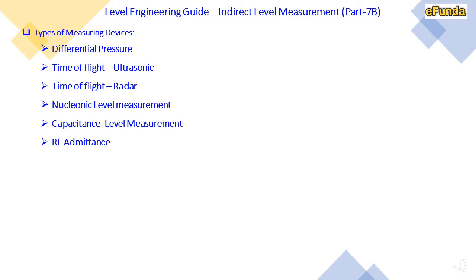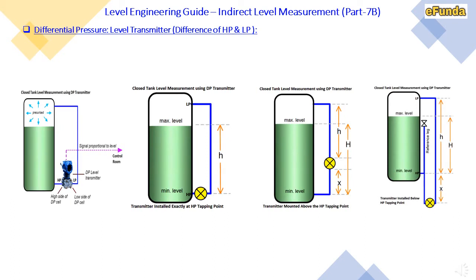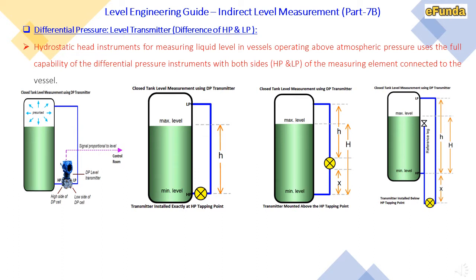We will see the key and most popular application devices used in industry. Our first type is the differential pressure (DP) level transmitter, which measures the difference between HP (high pressure) and LP (low pressure). The differential pressure acts between the two pressures appearing at the HP side and LP side. This technique is used to measure the exact level of liquid inside a vessel — a hydrostatic head instrument for measuring liquid level in a vessel operating above atmospheric pressure, using the full capability of the DP instrument with HP and LP sides connected to the vessel.